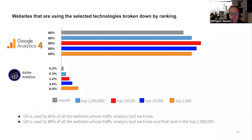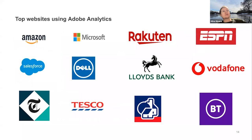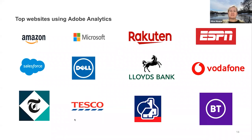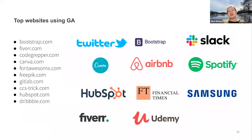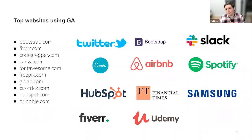Looking at the types of companies using each tool: Adobe users include Amazon, Tesco, and other big names with complex sites. Tesco doesn't just sell food — it also sells banking facilities and other things. GA users include many smaller sites as well. One quite surprising thing is that Amazon uses Adobe, which shows Adobe has something they see as valuable even at that scale.